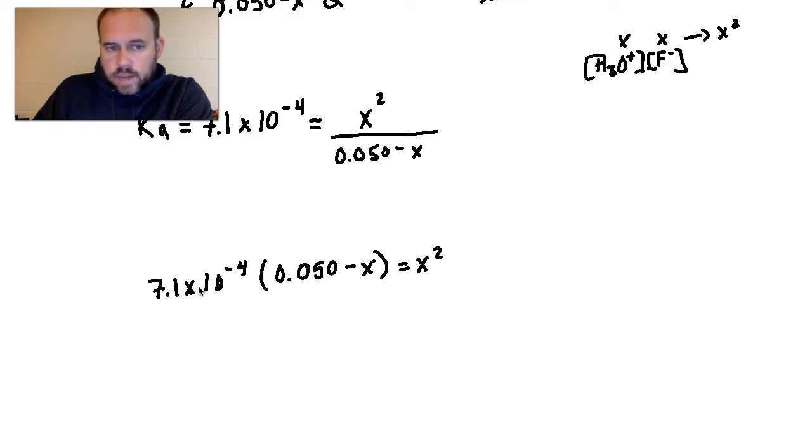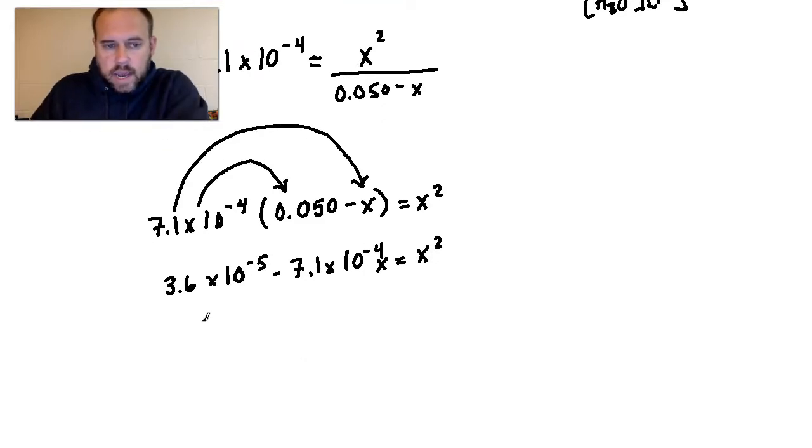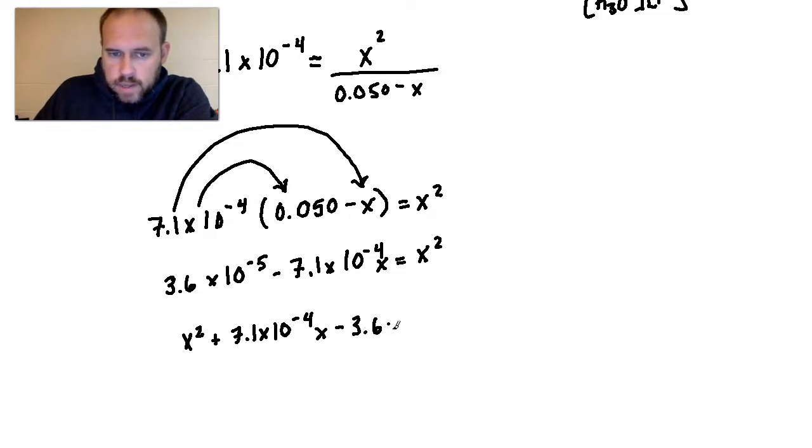So the next thing that I need to do then is I would distribute the 7.1 times 10 to the negative fourth. I'm going to distribute that to this, and then I'm also going to distribute that value to the negative x. And so if I do that, I'm going to end up with 3.6 times 10 to the negative fifth minus 7.1 times 10 to the negative fourth x, you don't want to forget that x is there, equals x squared. So now I'm getting close. If I isolate all of this to one side, then I can say that x squared plus, because this is minus over here, so I'm going to add it over to the other side, x squared plus 7.1 times 10 to the negative fourth x, and then I'm going to need to subtract this one, so it would be minus 3.6 times 10 to the negative fifth equals zero.